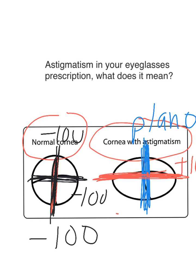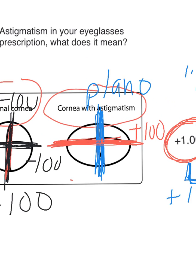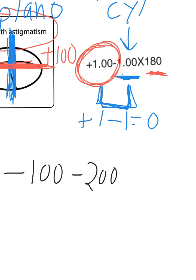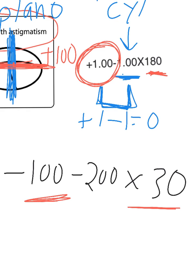Let's do another example. Let's say you have minus one, minus two, at axis 30. Again, you look at the first number, then the last number. So you know that at axis 30, the power is minus one.